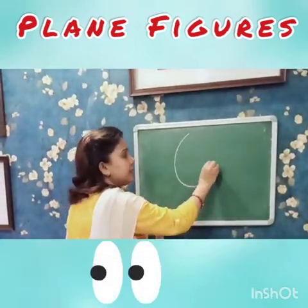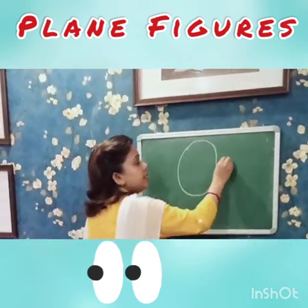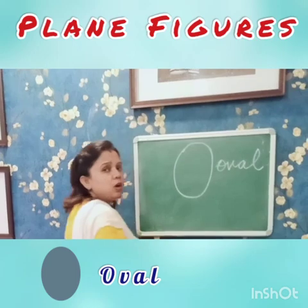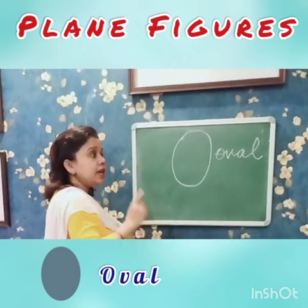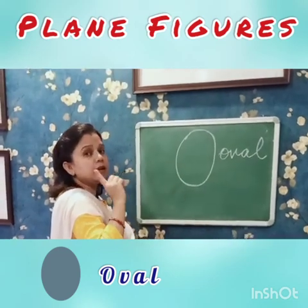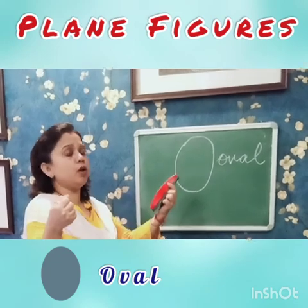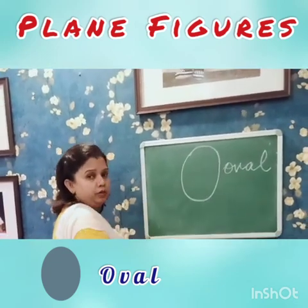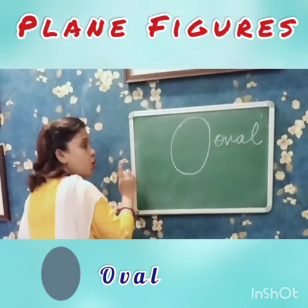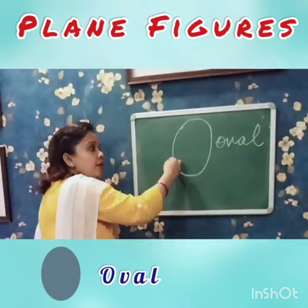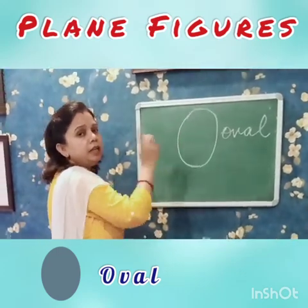Another plane figure — let us learn about this plane figure. It is an oval — O-V-A-L. Oval has how many edges? It is just like a circle. When you stretch the circle, when you make the circle long, you get an oval. Oval is an elongated circle. So oval also has one round edge like a circle and it does not have any vertices.